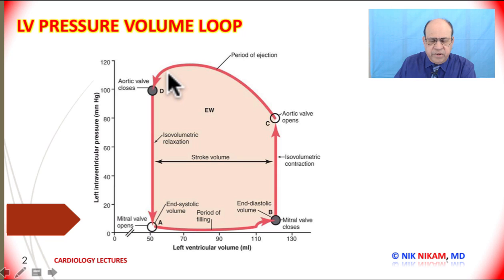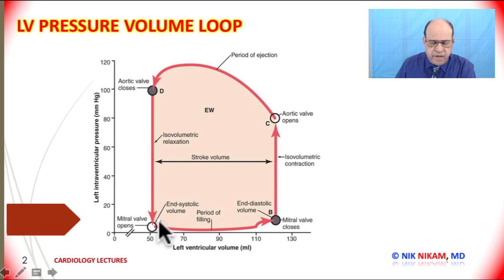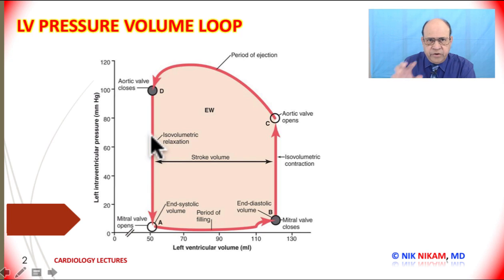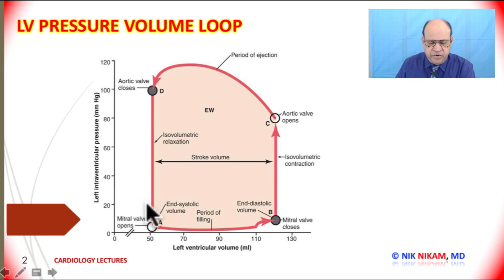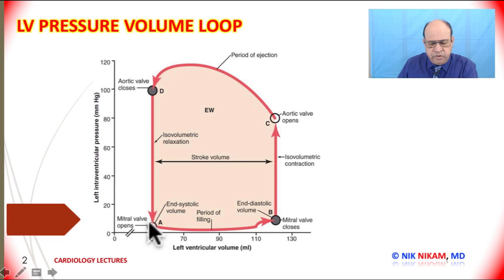When the ventricle begins to relax, the pressure comes down and the aortic valve closes at point D. From D to A we have isovolumic relaxation — during this phase both the aortic valve and mitral valve are closed, and the ventricle continues to relax. As a result, there is a significant drop in left ventricular pressure without any change in left ventricular volume.